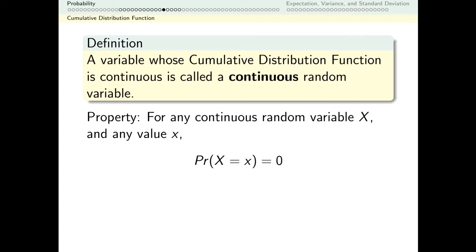So let that sink in for a minute. The last video where we were choosing a number between negative 3, negative 1, and 1 and 3 — that was a continuous random variable. We plotted its cumulative distribution function and it was continuous. The odds of getting any number in particular, the odds of getting negative 2, the odds of getting negative 2 and a half — they were all zero.